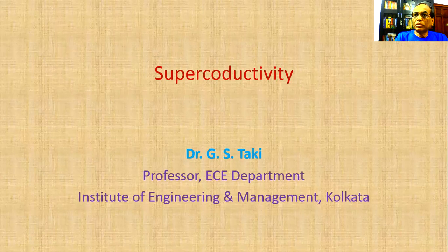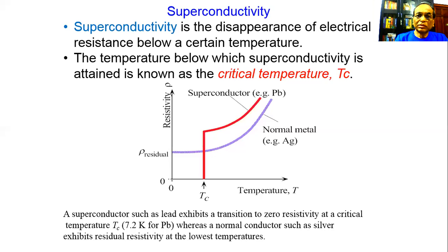Hello viewer, welcome back to the lecture series on Material Science and Engineering. Today's lecture will discuss superconductivity of materials. Superconductivity is the disappearance of electrical resistance below a certain temperature. The temperature below which superconductivity is attained is known as the critical temperature Tc.